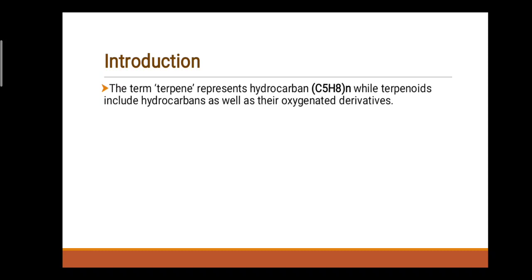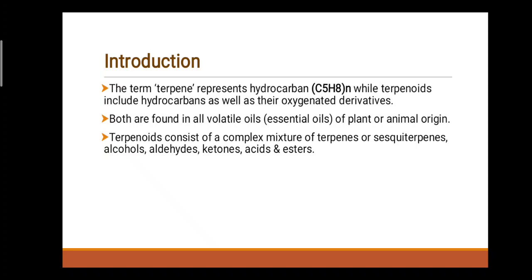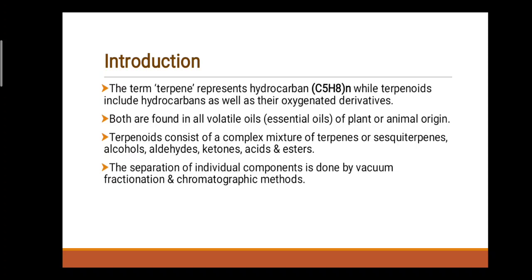Firstly, we will discuss the introduction. The term 'terpene' represents hydrocarbons with the formula (C5H8)n, while terpenoids include hydrocarbons as well as their oxygenated derivatives. N represents the number of isoprene units. Both are found in all volatile oils (essential oils) of plant or animal origin. Terpenoids consist of a complex mixture of terpenes or sesquiterpenes, alcohols, aldehydes, ketones, acids, and esters. The separation of individual components is done by vacuum fractionation and chromatographic methods.